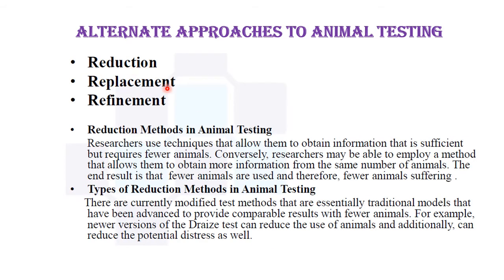Alternative approaches to animal testing include three methods: reduction, replacement, and refinement. Reduction means the number of animals used can be decreased to reduce suffering. Replacement means whenever possible we replace animals with in vitro studies such as cell cultures or tissue cultures. Refinement means when animals are treated, their suffering should be counterbalanced by supplementing pharmaceutical substances — for example, using analgesics when pain is induced.